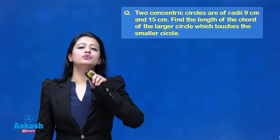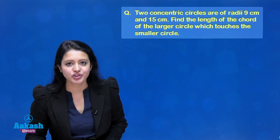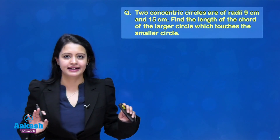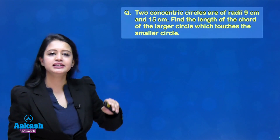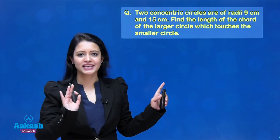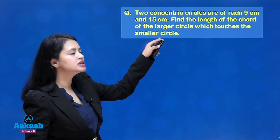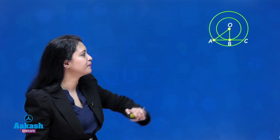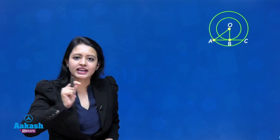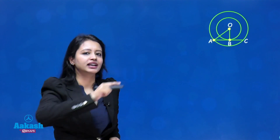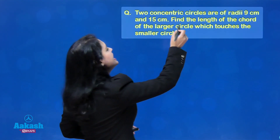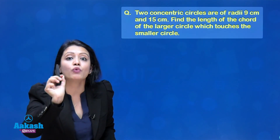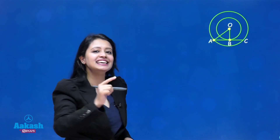Let us move on to a quiz. This question is repeatedly asked in board exams — in 2022 boards and 2023 boards. Two concentric circles have radii of 9 centimeters and 15 centimeters. Concentric circles are circles with the same center. Find the length of the chord of the larger circle which touches the smaller circle. Let us make a diagram. We have two circles, one big and one small, both centered at O. OB is the radius of the small circle and OA is the radius of the big circle. Notice that AC is the chord of the larger circle and it is touching the smaller circle, which means AC is a tangent to the smaller circle.